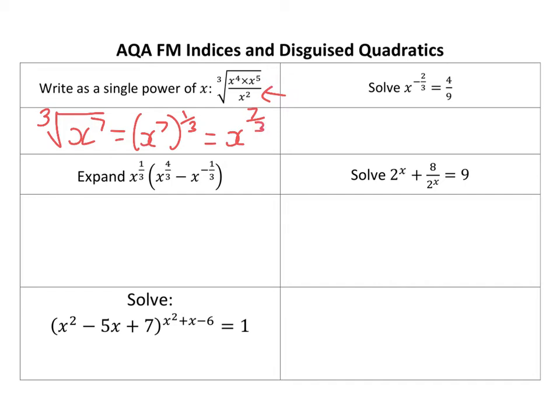Nice and easy. Expanding brackets — we do multiplying. So the first thing: x to the power 3 times x to the power 4 thirds is x to the power 5 thirds. Minus x to the power 3 times x to the power minus 3 is x to the power 0. Now anything to the power 0 we should know is 1.